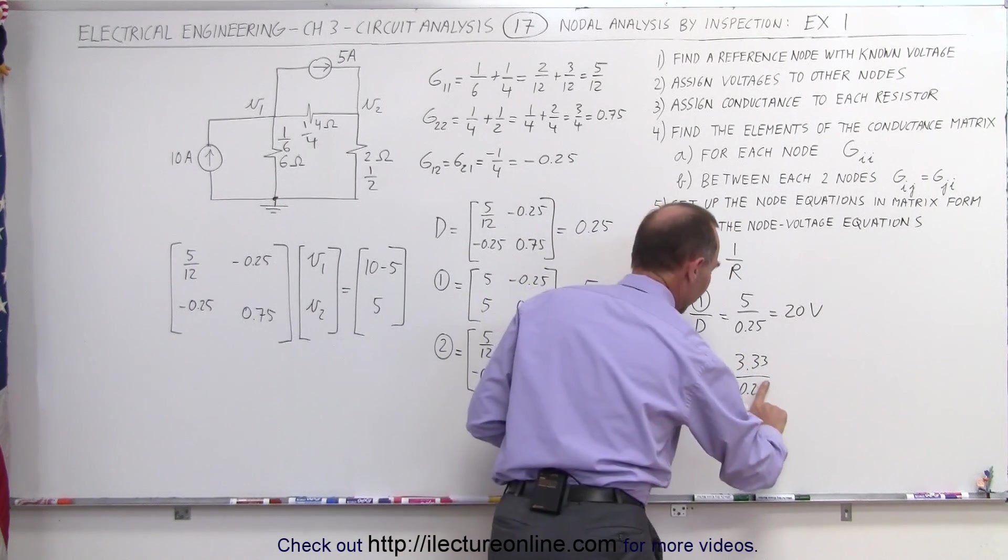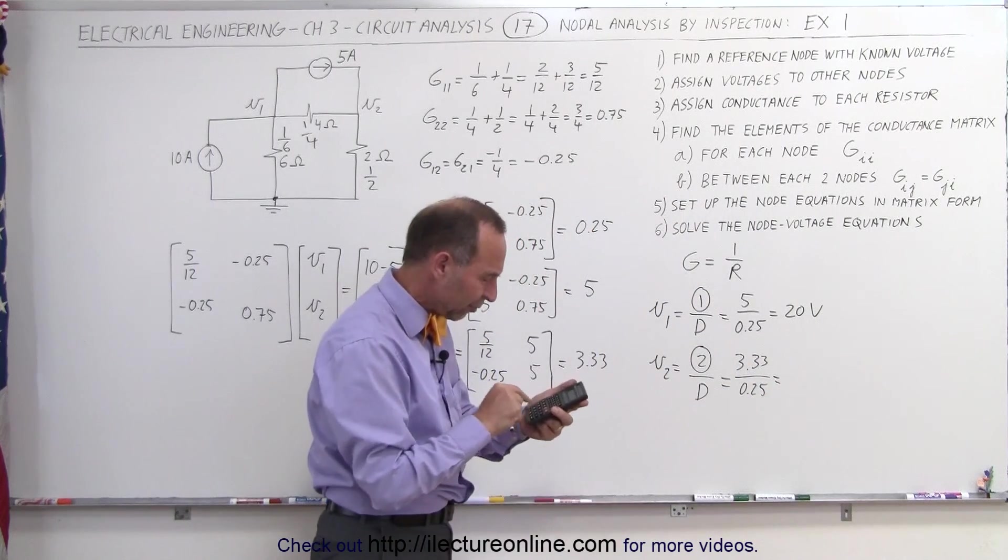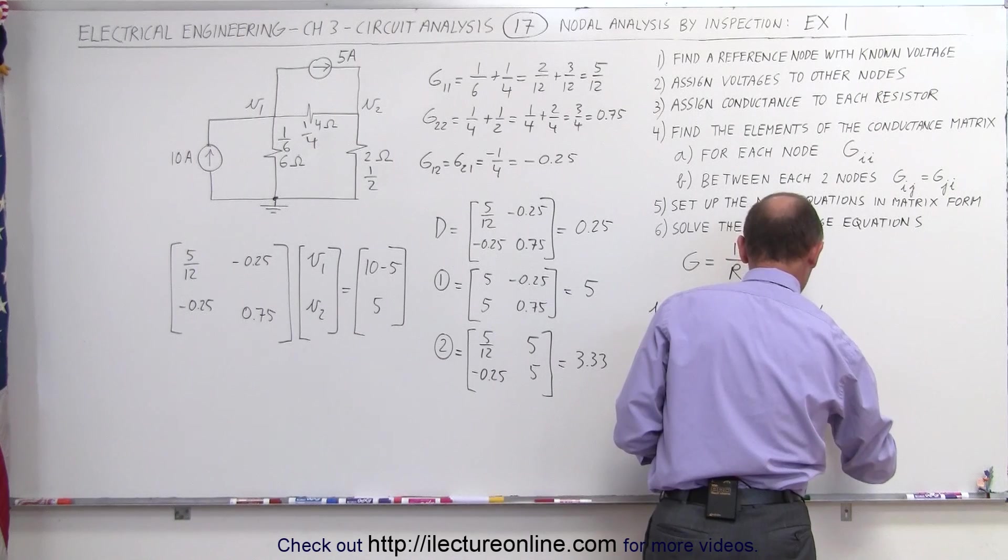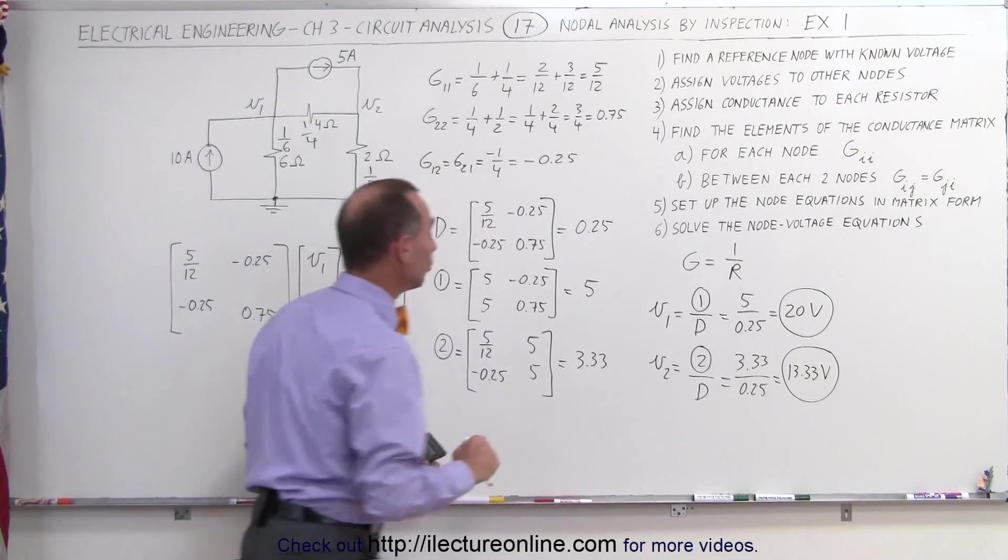And the voltage at node 2 is equal to the result of the second matrix divided by the determinant, which is equal to 3.33 divided by 0.25. It's this number times 4, and we get 13.33 volts. And those are the voltages at the two nodes, V1 and V2.